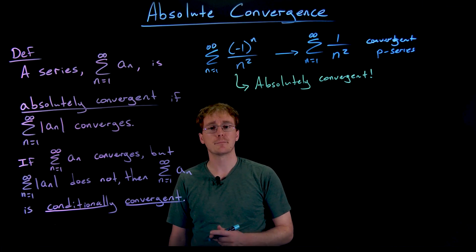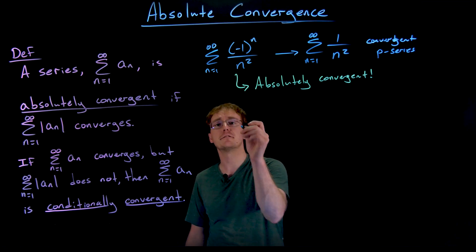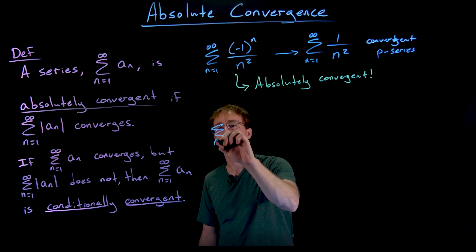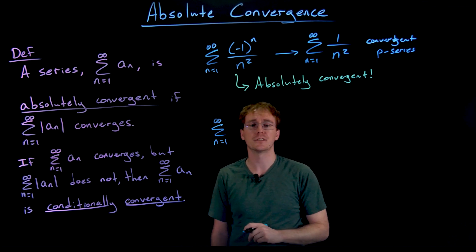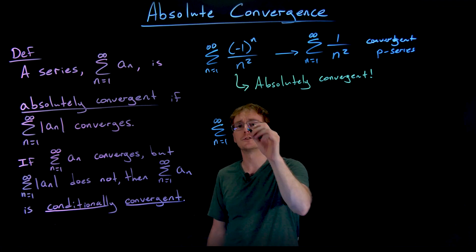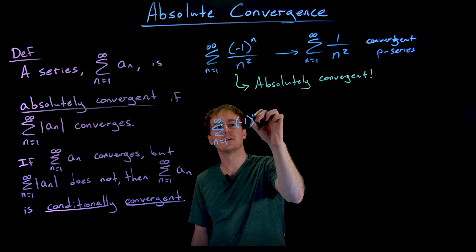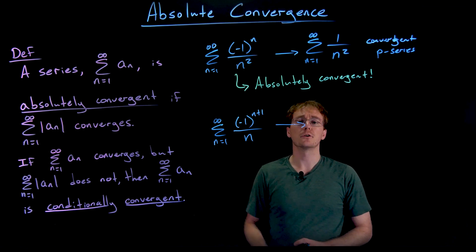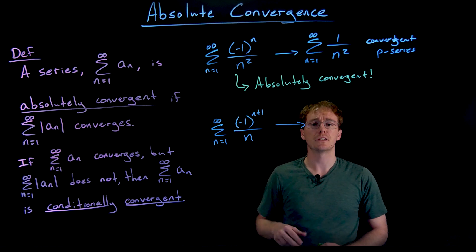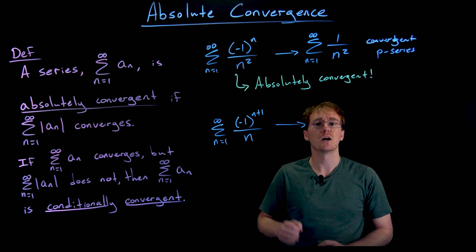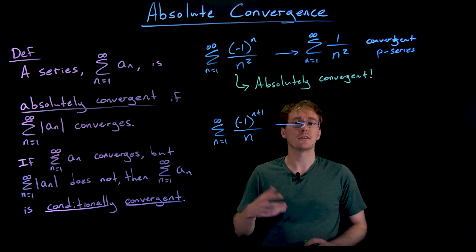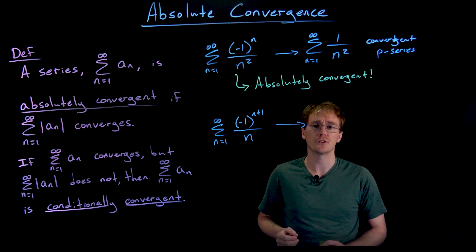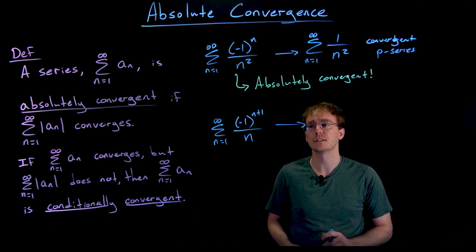We also have an example of a series that is conditionally convergent, and that is the alternating harmonic series. One way to write it is the sum from n equals 1 to infinity of negative 1 to the n plus 1 over n. We argued earlier that by the alternating series test, the alternating harmonic series must converge — it is clearly alternating, the terms are decreasing, and they're getting closer and closer to zero.